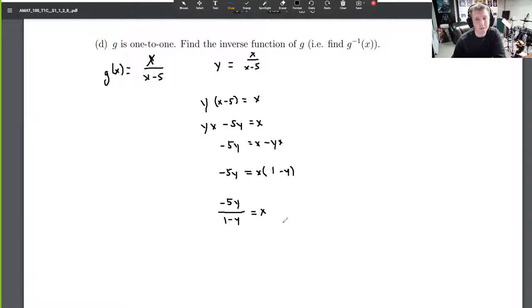Then what do we do? Then what we need to do is we need to switch. This is all step 2. This is step 1 of the procedure. Step 3 is switch the x and the y's, so every x becomes a y and every y becomes an x. Interchange them. So y, which is now our inverse function with regards to x, is negative 5x over 1 minus x. Step 3 is accomplished, we found our inverse function.